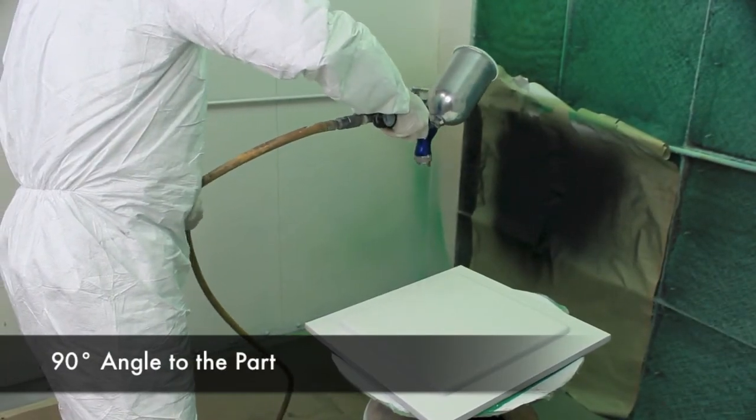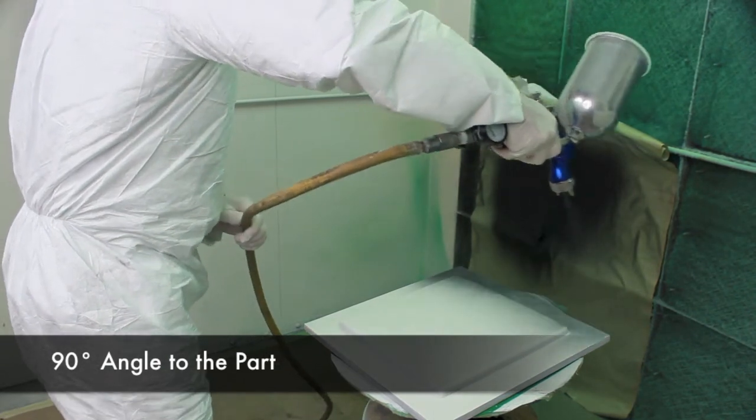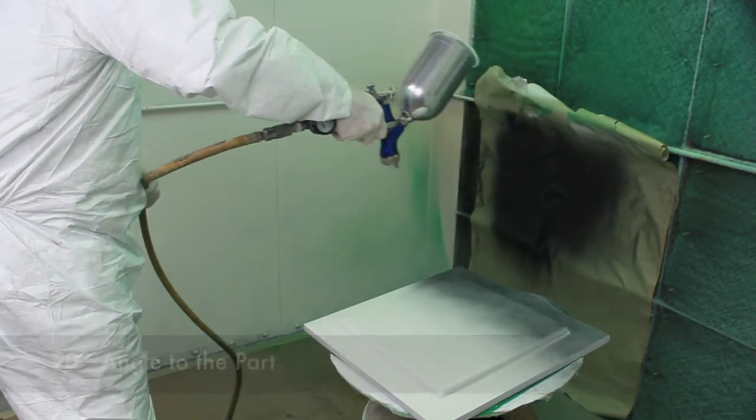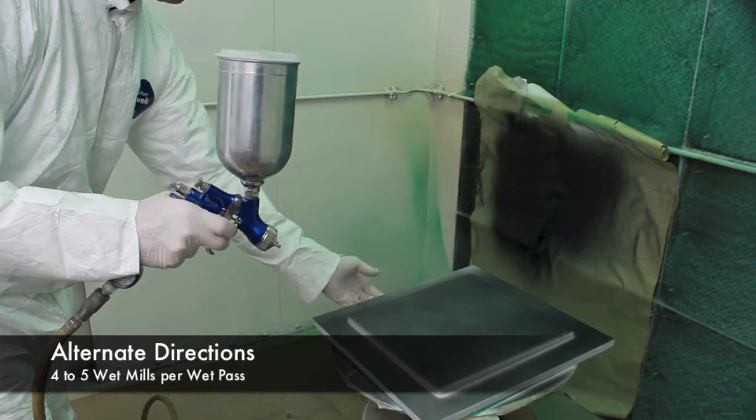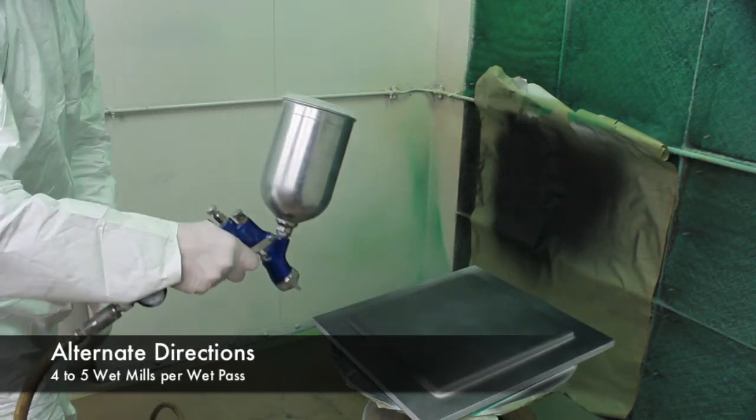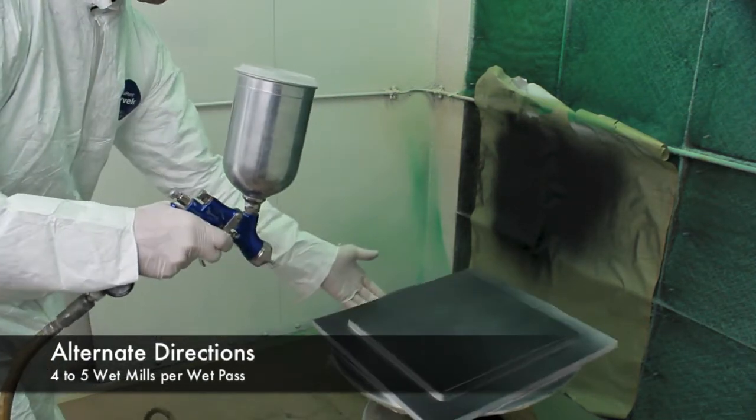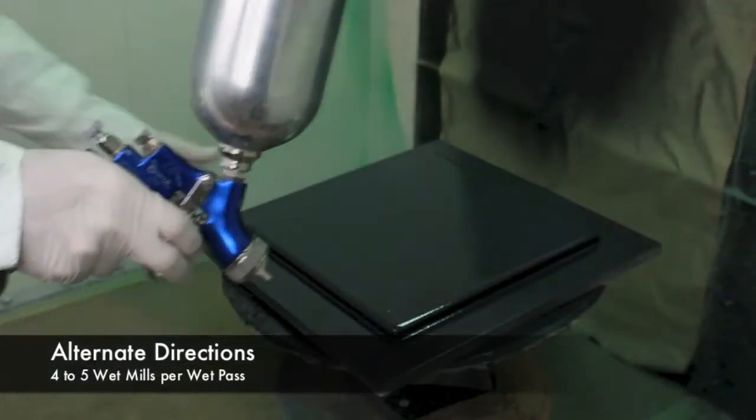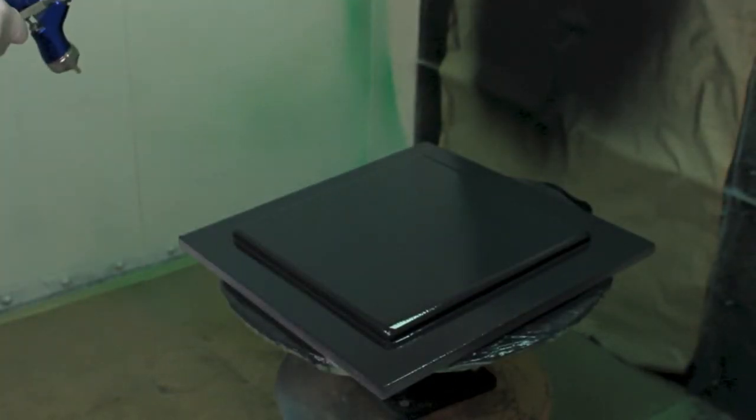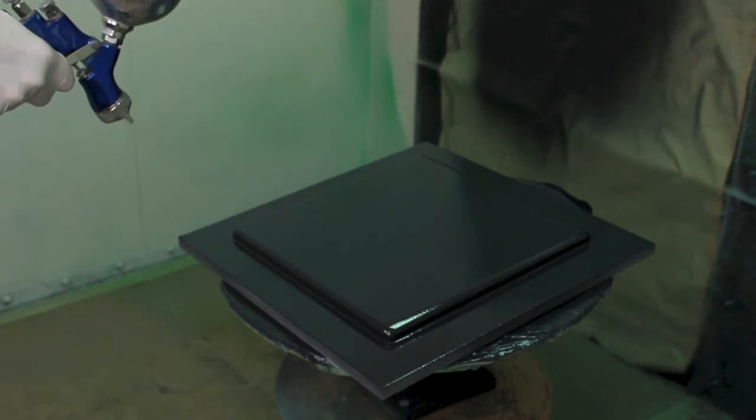Hold the gun at a 90 degree angle to the part. Make your first pass fairly light, and then if possible, make your additional passes in an opposite direction. Build about 4 to 5 wet mils per wet pass, and then wait about 2 minutes for solvent release. Do this till you've built about 20 wet mils.